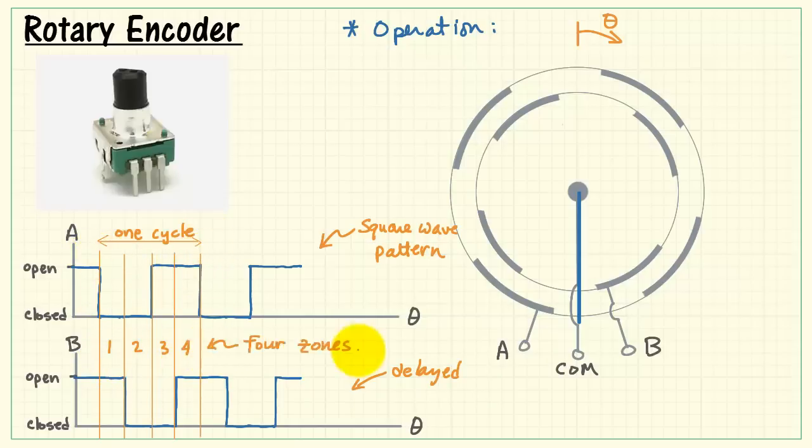One cycle has four distinct zones, hence the name quadrature. So this pair of waveforms that we were looking at are referred to as quadrature waveforms.